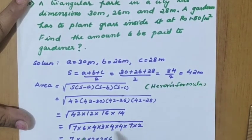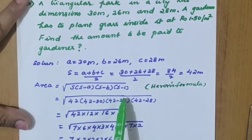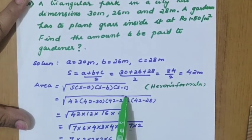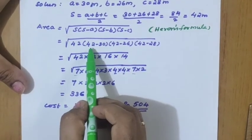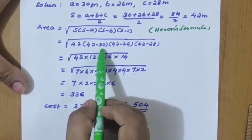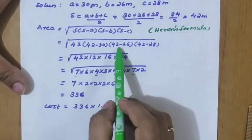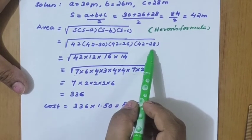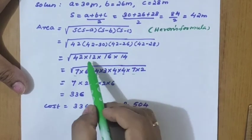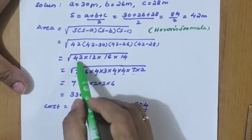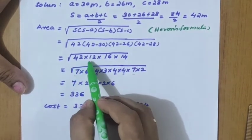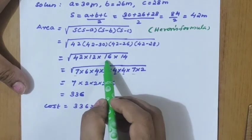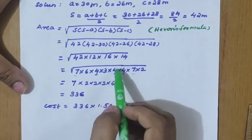Area equals √[s(s−a)(s−b)(s−c)] = √[42 × (42−30) × (42−26) × (42−28)] = √[42 × 12 × 16 × 14]. After simplification you get the expression under the root as 42 × 12 × 16 × 14.